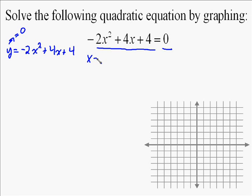Well, y equals 0 at a very specific place, and that is at the x-intercepts. So if we graph this equation and find the x-intercepts, then we know that we have the solution to the quadratic equation.